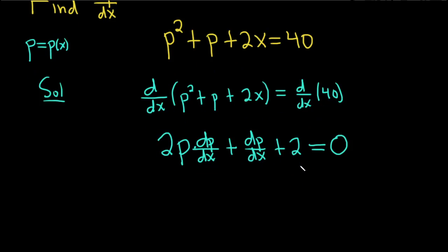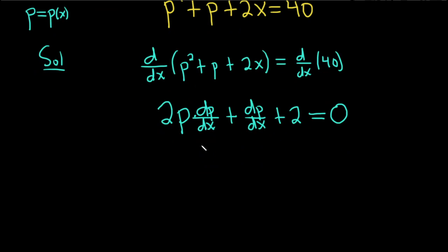We're looking for dp/dx, so we can factor it out from these terms here. This is dp/dx times 2p plus 1—we pulled out dp/dx from both of these.